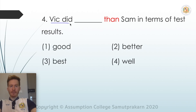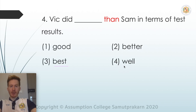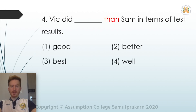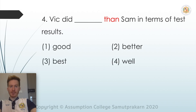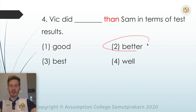Question four: 'Vic did ___ than Sam in terms of test results.' The options are good, better, best, and well. 'Than' suggests we need a comparative. Good and well are positives; best is a superlative. Better ends in ER, so better is the comparative. So number two — better — is the correct answer.